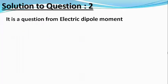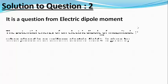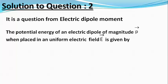Let us try to solve this question. We know that the potential energy of an electric dipole of magnitude p vector when placed in a uniform electric field of intensity E vector is given by U equals minus p vector dot E vector, or U equals minus pE cos theta.